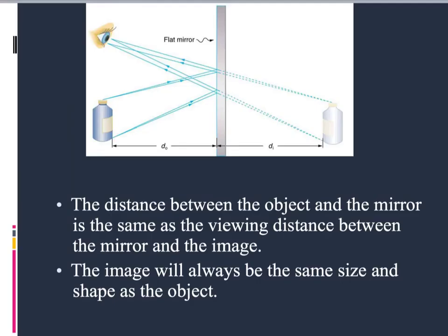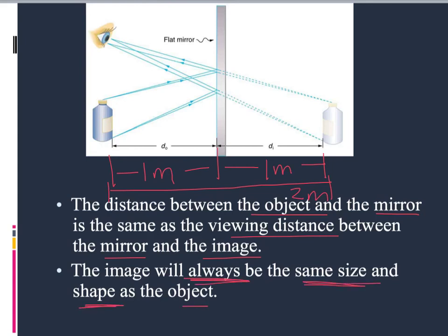So when we look at this, there's a couple things we need to point out. The distance between the object and the mirror is the same as the viewing distance between the mirror and the image. So in other words, if this distance here is one meter, then we will see it as being another meter away. So that it will look like it's actually two meters away. That's what that means. And that's true no matter what this distance is. If it was two meters, it would look two meters on this side and it would be four meters total. The other thing that always happens with flat mirrors is the image will always be the same size and the same shape as the object. It's not going to suddenly become smaller or bigger. It will always be the same size and shape. So that's the end of section two talking about flat mirrors.